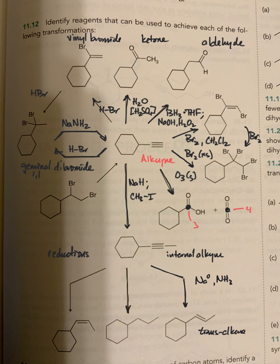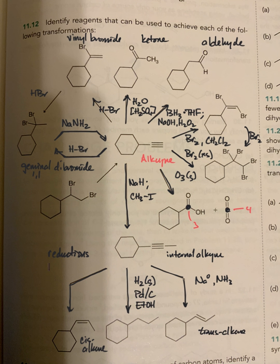The middle reaction going straight down fully reduces the alkyne to an alkane using excess hydrogen gas with palladium on carbon as the metal catalyst and ethanol as solvent. To the left and down, we end up with a cis alkene using hydrogen gas with a poisoned catalyst — palladium on carbon with barium sulfate — in ethanol. The poison stops the reduction at the one-stage level, giving the cis alkene rather than the fully reduced alkane.